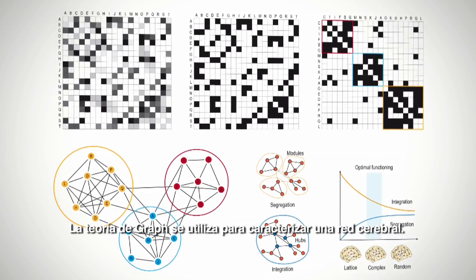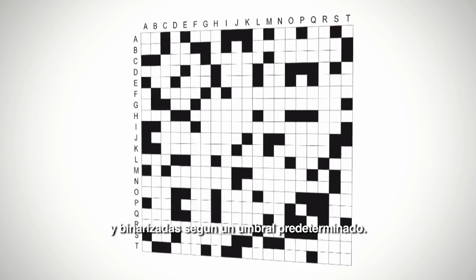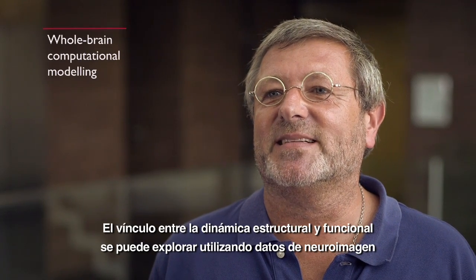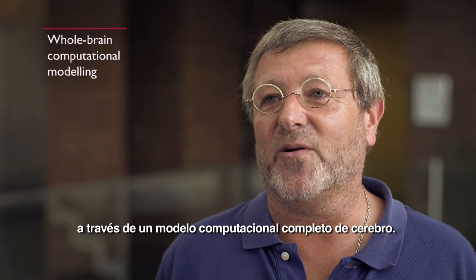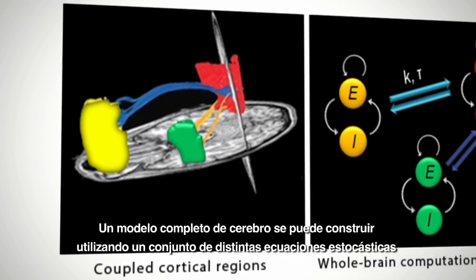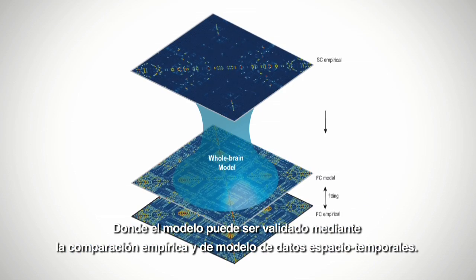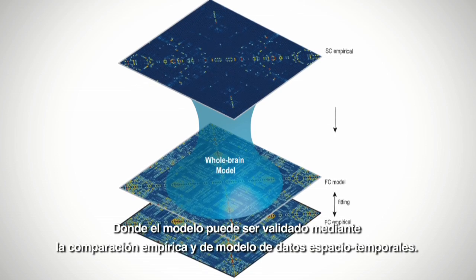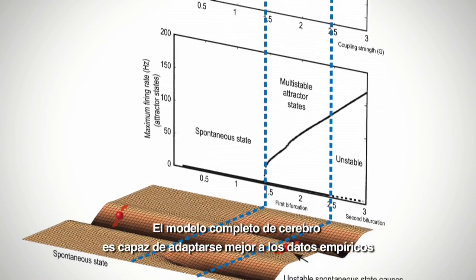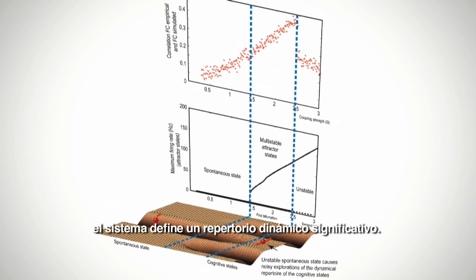Graph theory can be used to characterize a brain network, where connections can be represented with a matrix of connection strength binarized at a given threshold. The linkage between structural and functional dynamics can be explored using whole brain computational modelling of neural imaging data. A whole brain model can be constructed using a set of stochastic differential equations coupled according to the SC matrix, and validated by comparing model and empirical spatiotemporal data. The whole brain model best fits empirical data when the network is critical, so that at that operating point the system defines a meaningful dynamic repertoire.